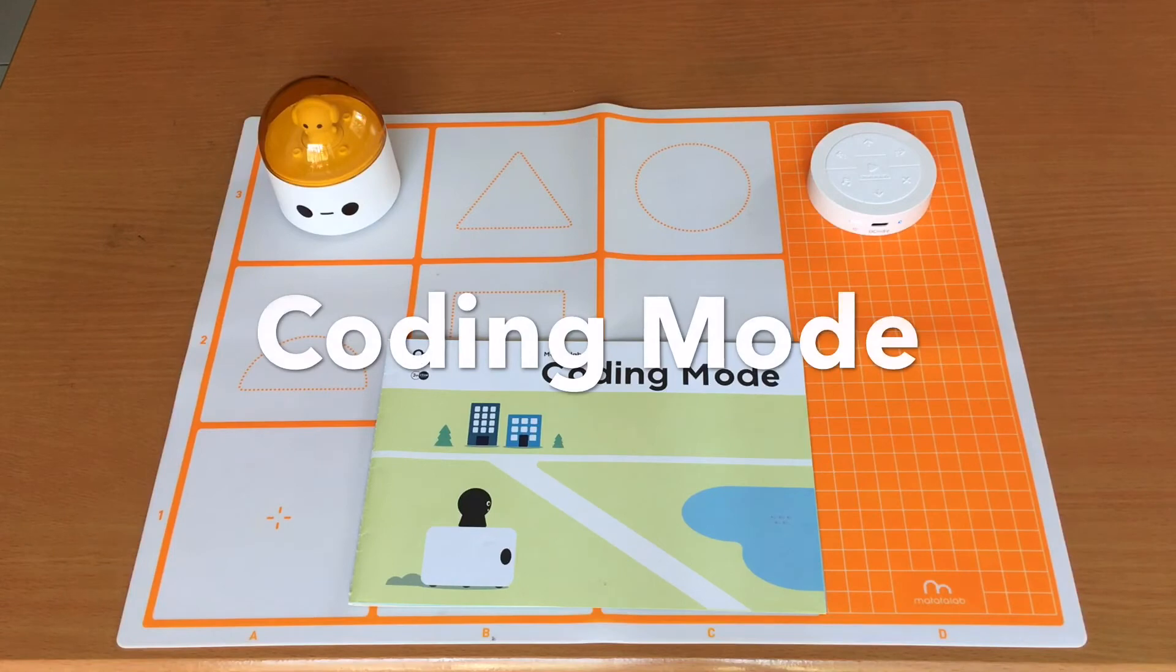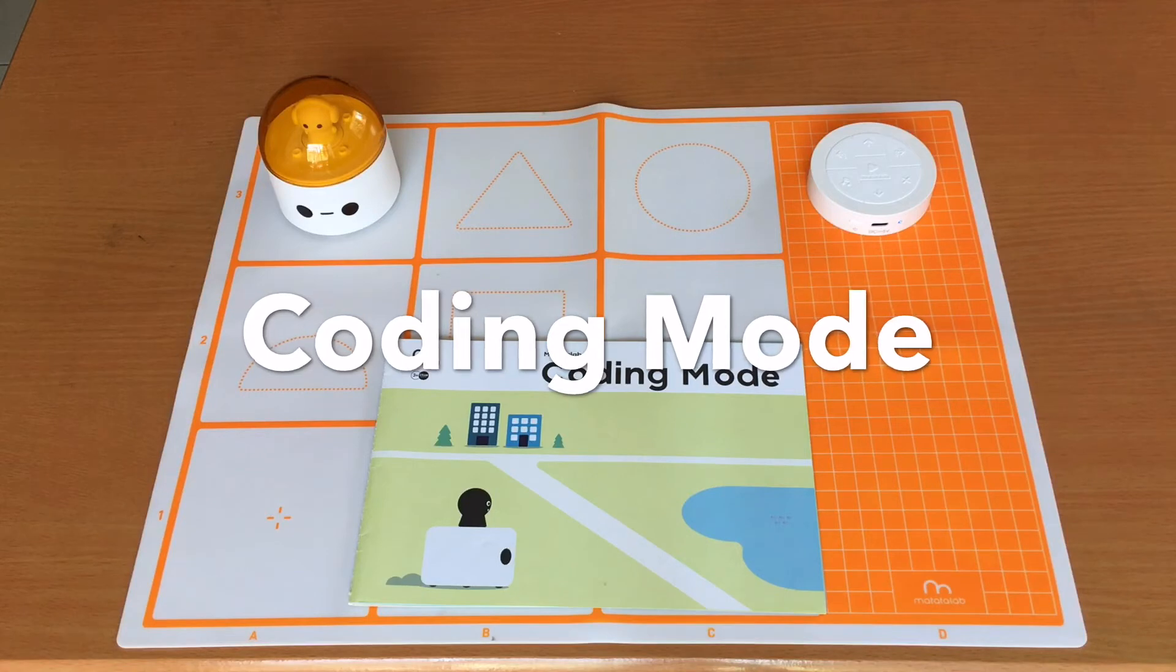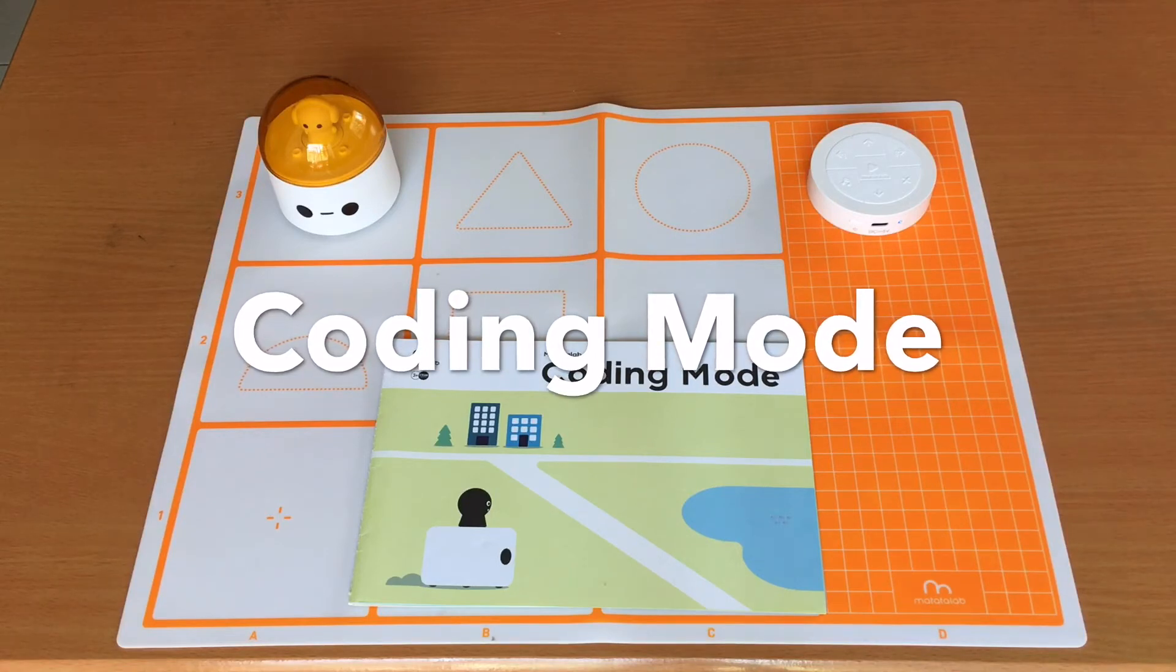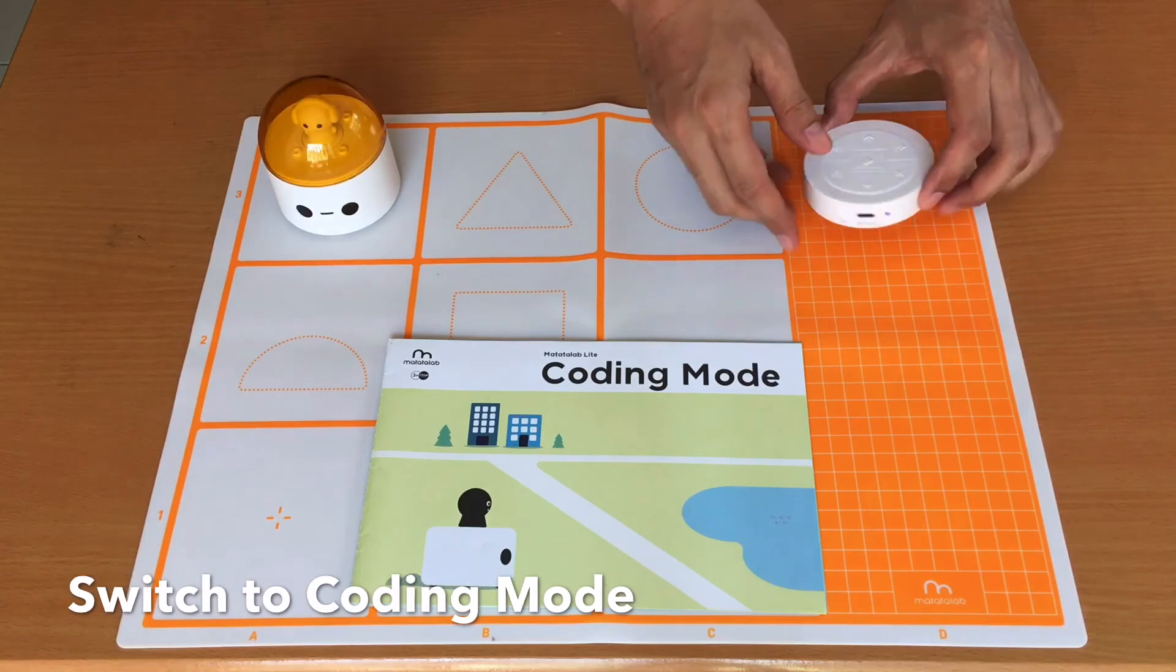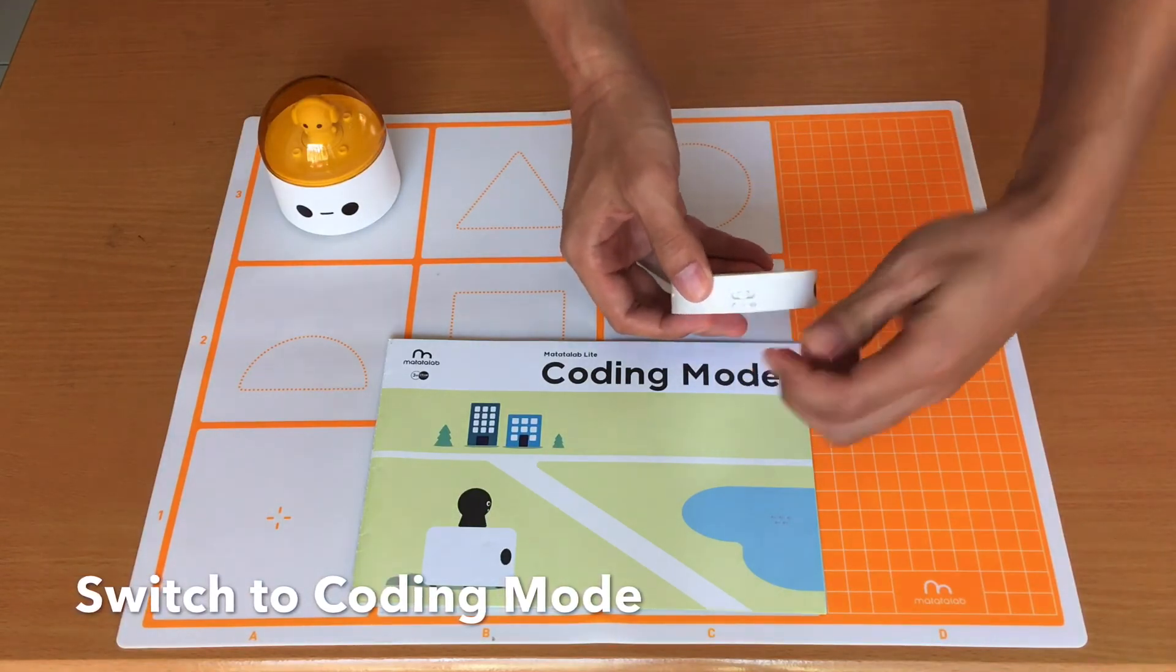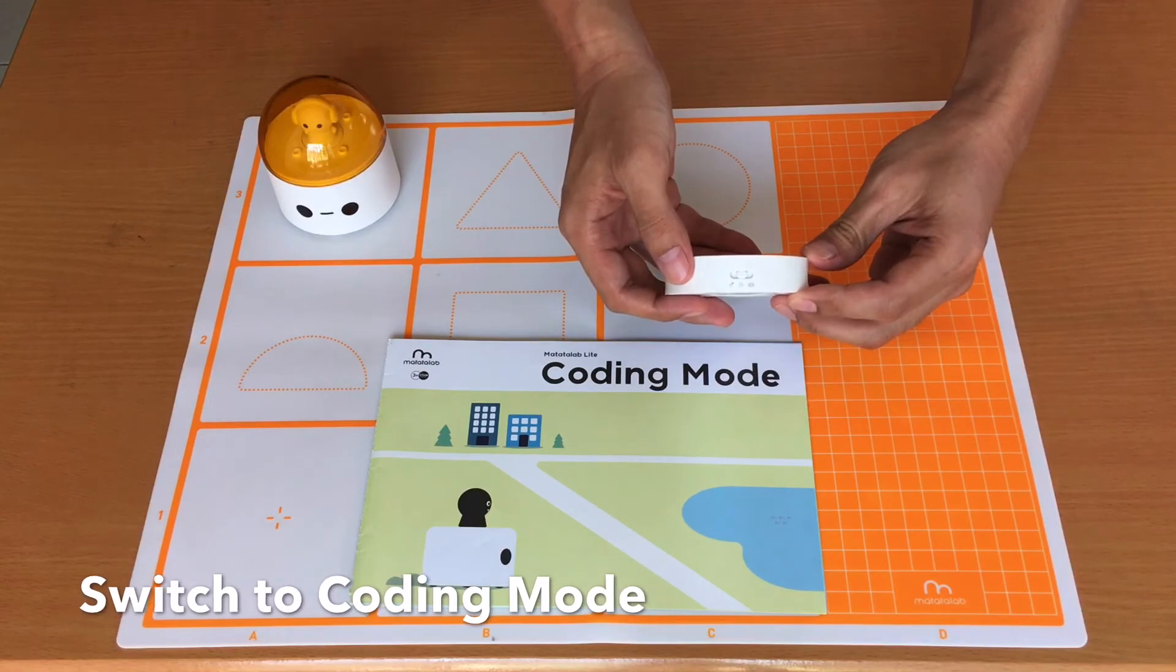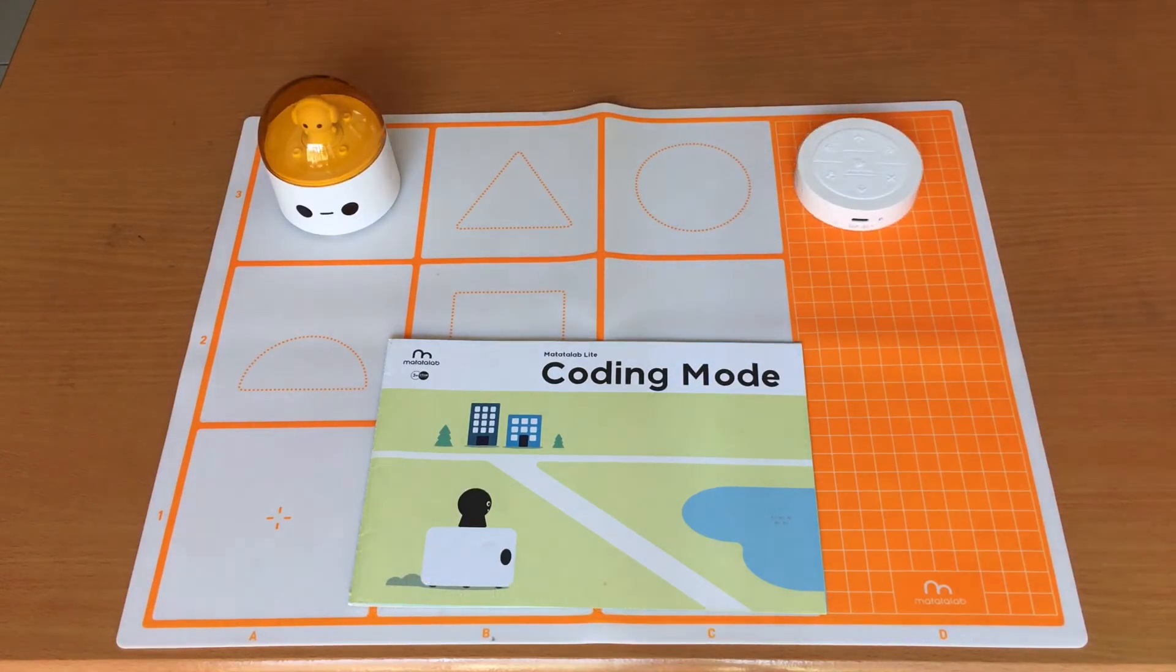In coding mode, the kids start learning the basic concept of programming by entering a series of commands into the controller and pressing the play button to have the Matatabot execute the command. To enter the coding mode, turn this switch into the coding mode.